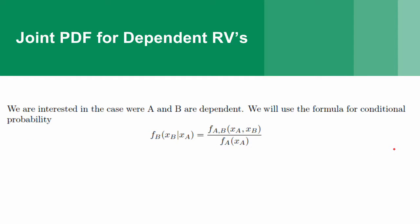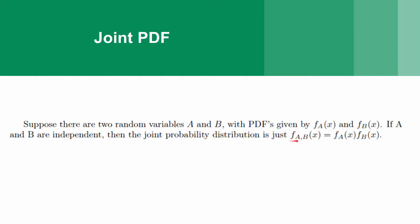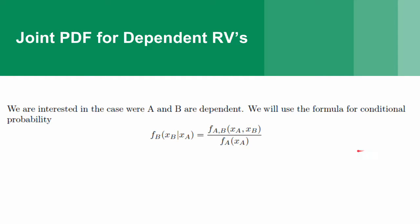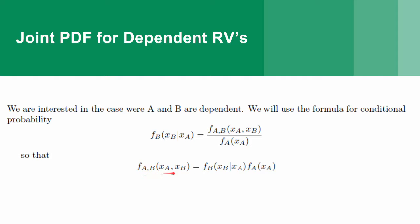However, we're interested in looking at dependent random variables, where this is not the case. To look at this, we're going to be using the conditional probability formula. The probability of observing x sub b given a value of x sub a is the joint probability density function for a and b divided by the marginal probability distribution function for a. We're going to rearrange this so that we can find the joint PDF as long as we know the marginal PDF for a and the conditional marginal PDF for b.